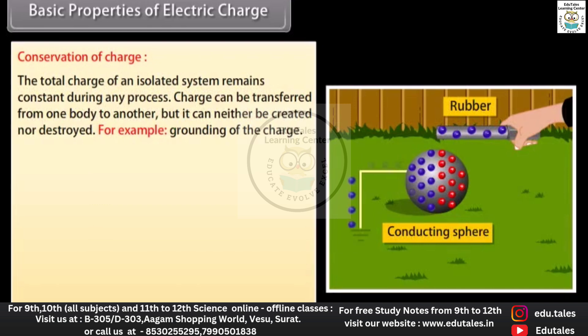Conservation of charge: the total charge of an isolated system remains constant during any process. Charge can be transferred from one body to another, but it can neither be created nor destroyed. For example, grounding of the charge.